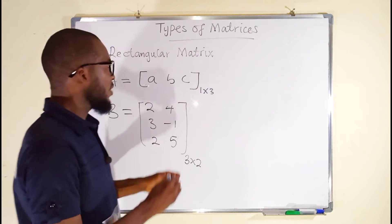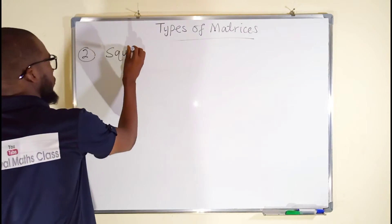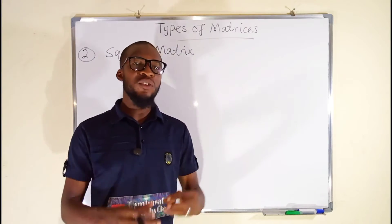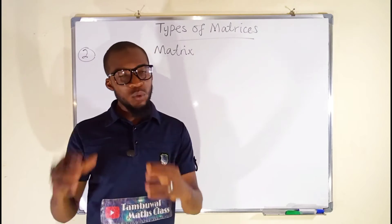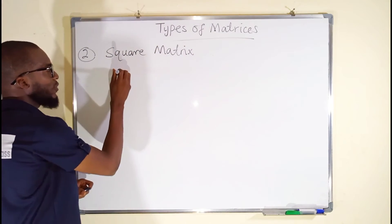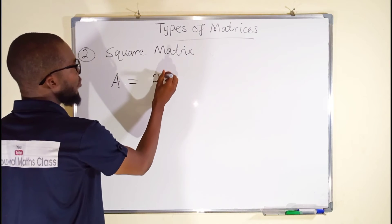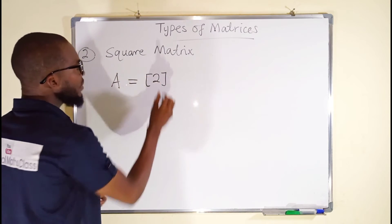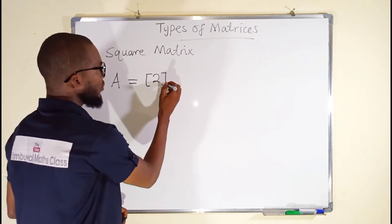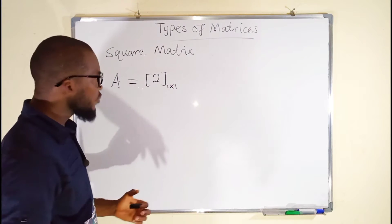Let's move on to the next one, which is a square matrix. A square matrix is a type of matrix in which the number of columns and the number of rows are exactly the same. For example, matrix A as just the number two — you can see that this matrix has one column and one row, so this is a one-by-one matrix and it is said to be a square matrix.